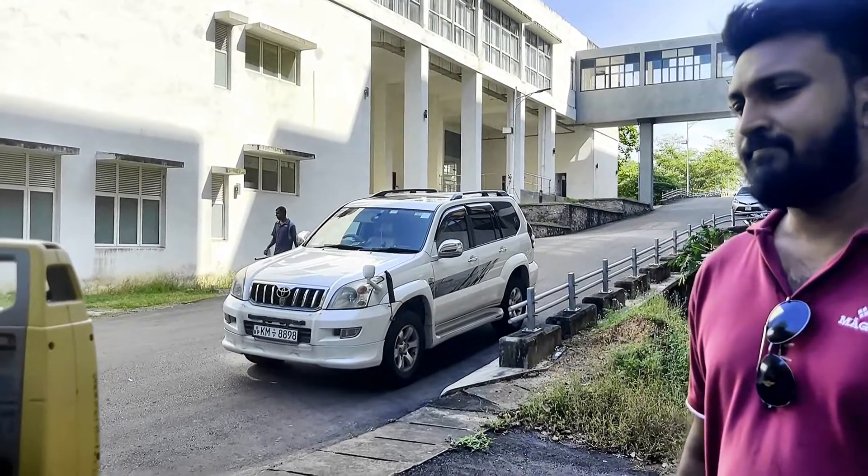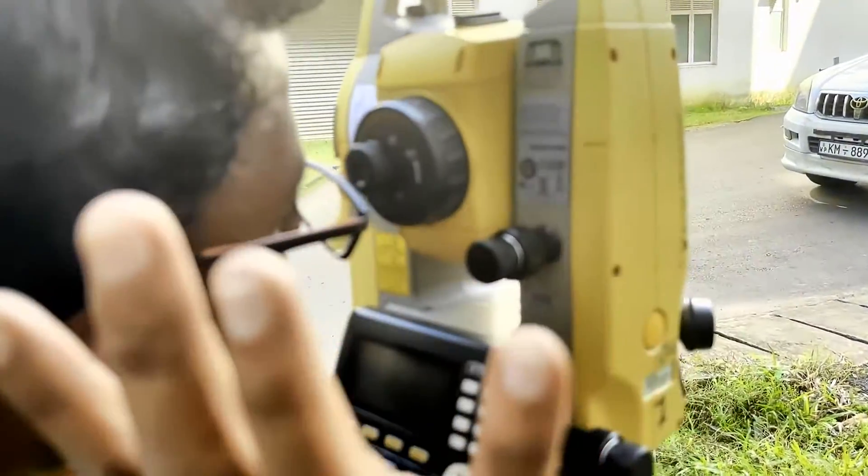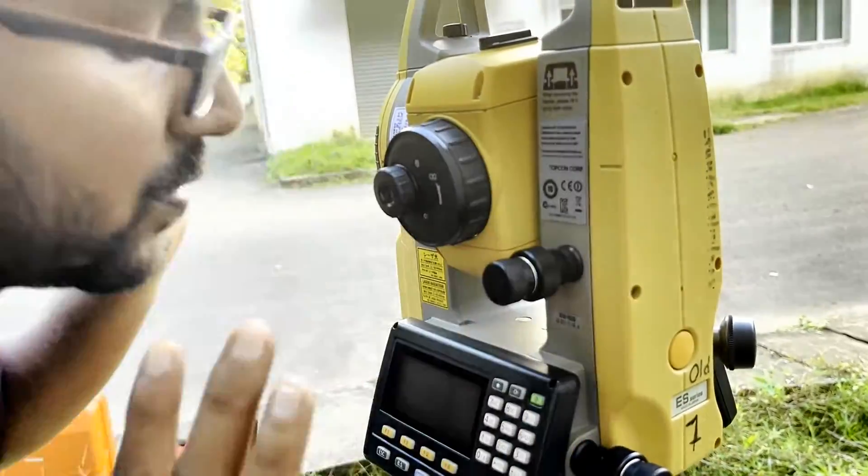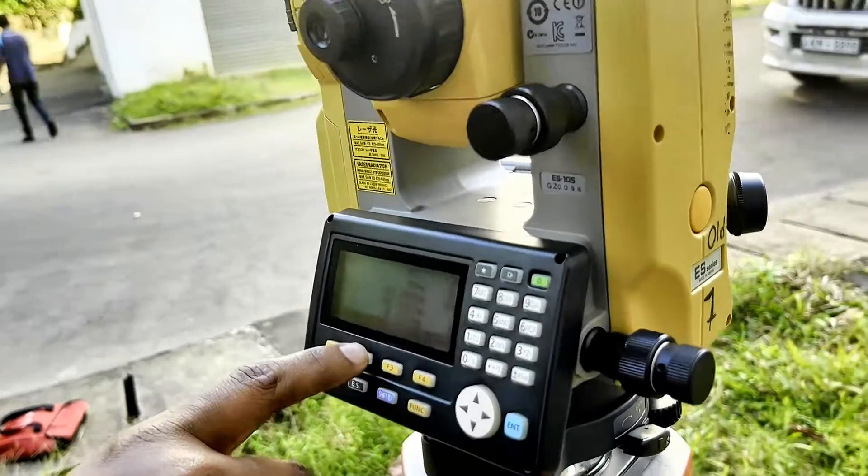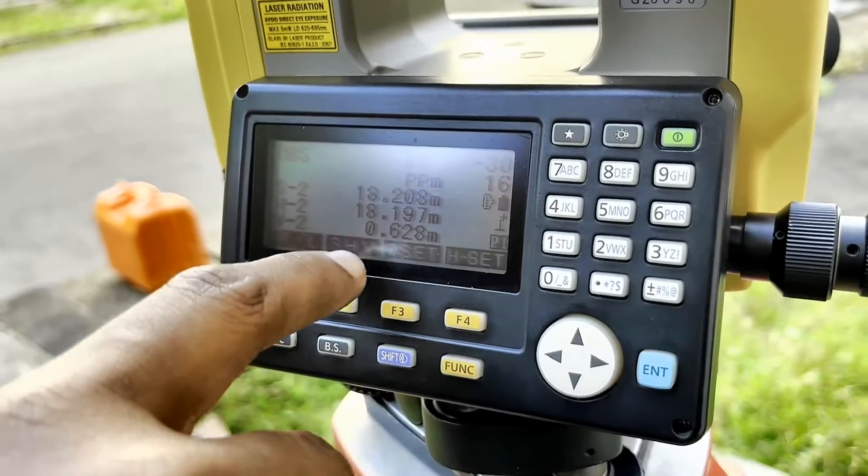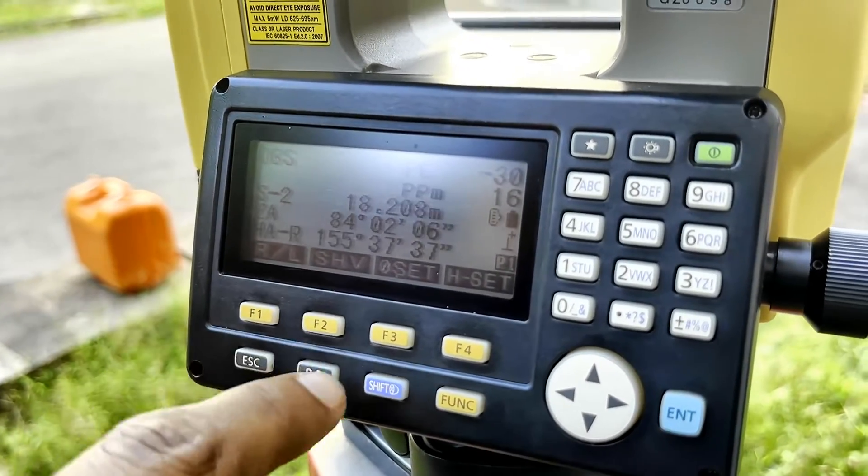Now, I need to move my head side by side and see whether any parallax error, if it is there, I need to correct it from the focusing screw. Now, it's fine. Now, I need to go to, again, I need to see the angles. For that, I go to SHG mode back.